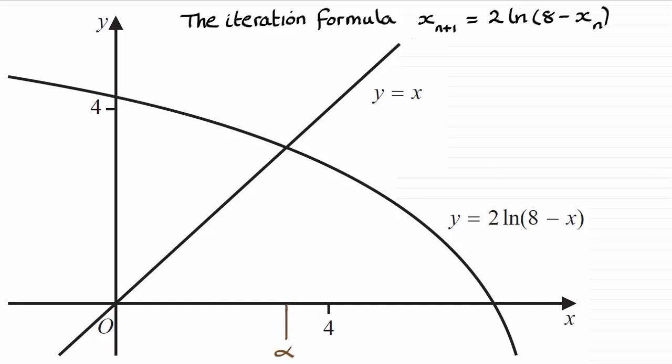To answer this, you need to draw a cobweb graph on top of this graph here and hope that it spirals in. We take our first approximation x1 being equal to 4, and from here we draw a line up onto the graph of y equals 2 times the natural log of 8 minus x.